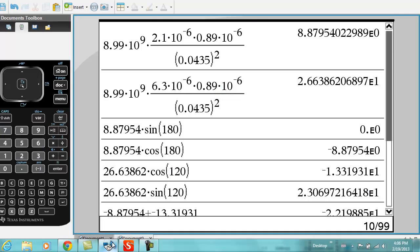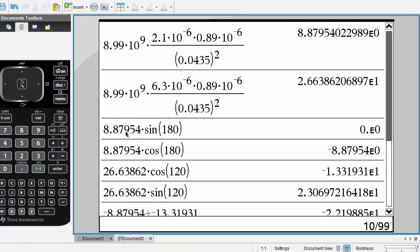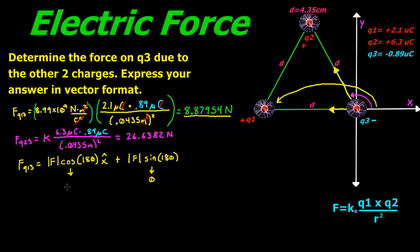For the x component, we took the force of 8.87954 newtons times cosine 180 and got negative 8.87954 newtons. Cosine 180 gives us negative 1, so it's just the magnitude times negative 1. The y component is zero since sine 180 is zero. So for F13 we have negative 8.87954 newtons in x and zero in y — just note that this is a scalar component.